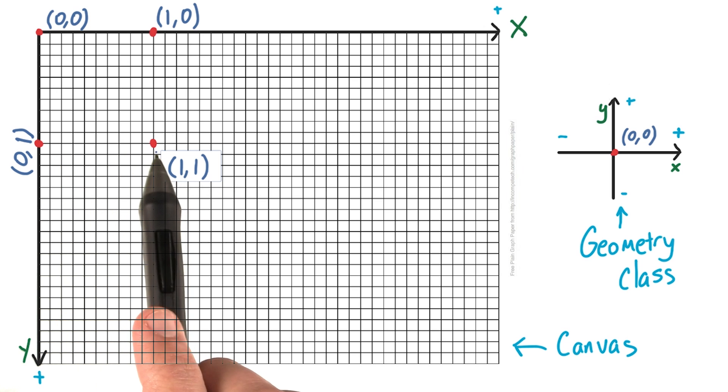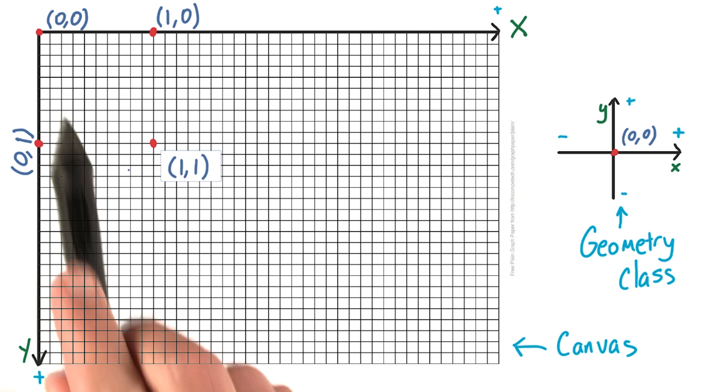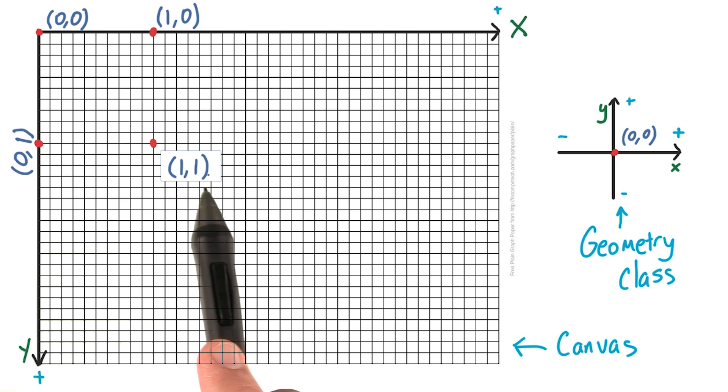For this last point, we've gone over 10 lines, so our x is 1, and we've also gone down 10 lines, so our y is 1.